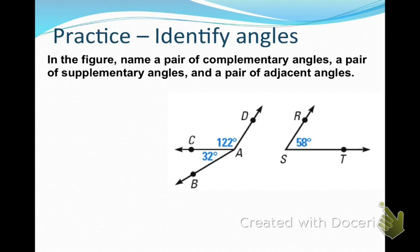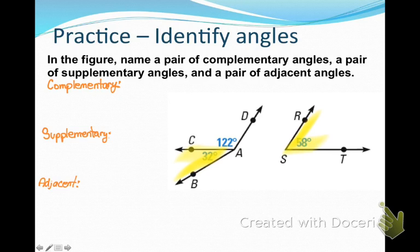Now look at the practice in your notes. I want you to look at the figure and name a pair of complementary angles, a pair of supplementary angles, and a pair of adjacent angles. Remember that complementary angles are two angles that add up to 90 degrees. I have two here: angle BAC and angle S. Notice that I used three letters to name my first angle and only the vertex to name my second angle. I cannot call the first angle A because vertex A is the vertex of two angles.